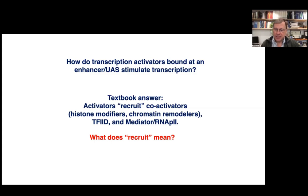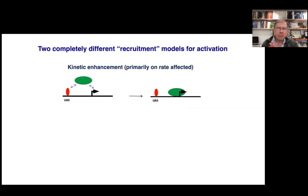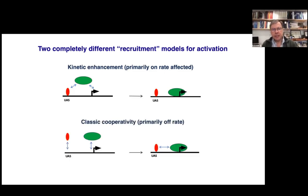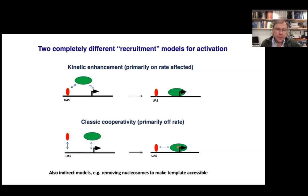If you open a textbook, the standard answer is that activators recruit coactivators, chromatin remodelers, TF2D, Mediator, or RNA polymerase. But I want you to step back and think about what 'recruit' actually means. Many of us think of it as the activator reaching out and grabbing the target factor and bringing it to the promoter — in kinetic terms, that means enhancing the association rate.